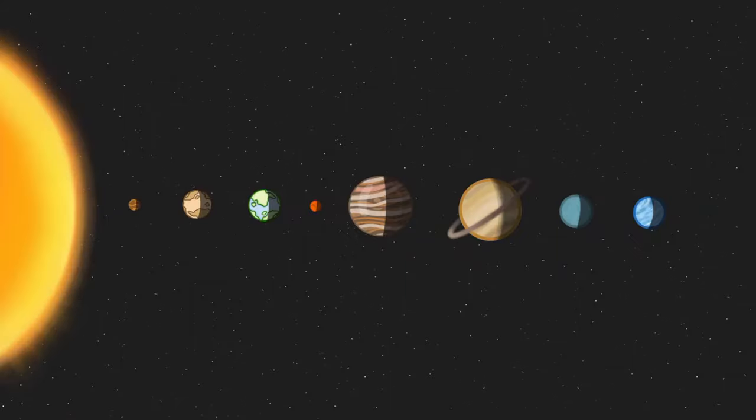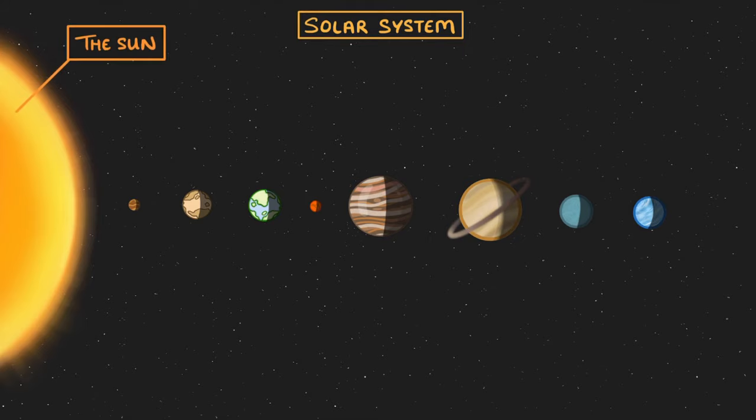If we zoom out, we're now looking at the entire solar system. So Earth is just one of eight planets that orbit our central star, which we call the Sun.